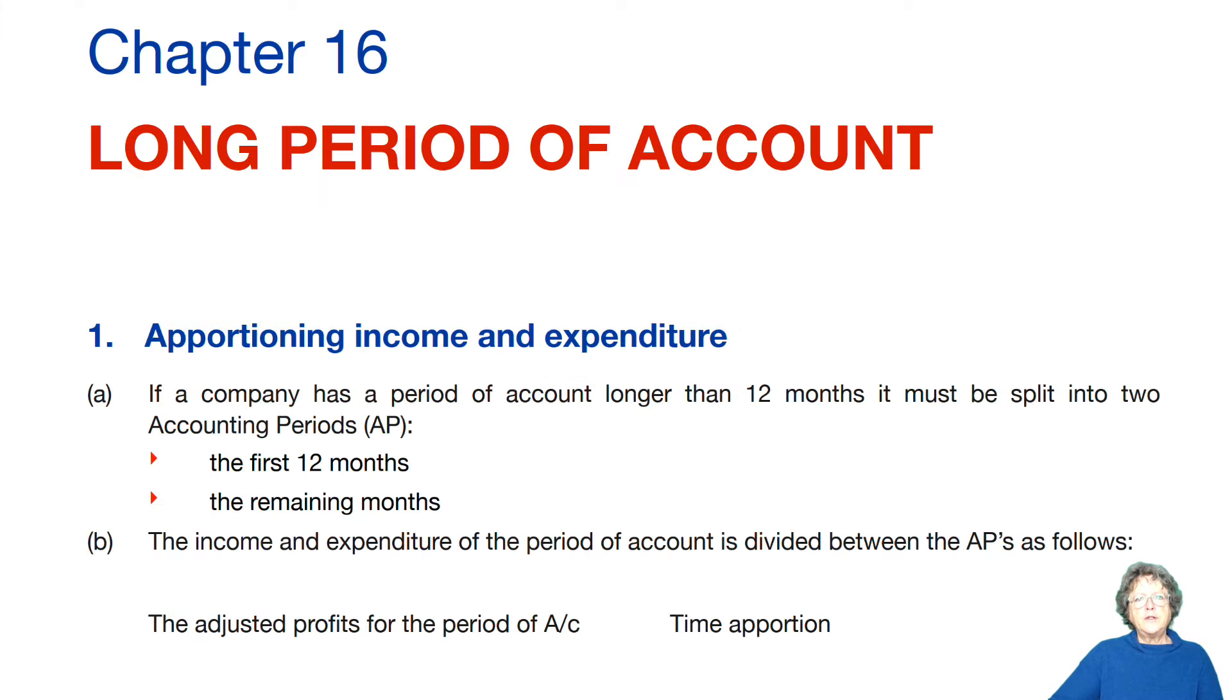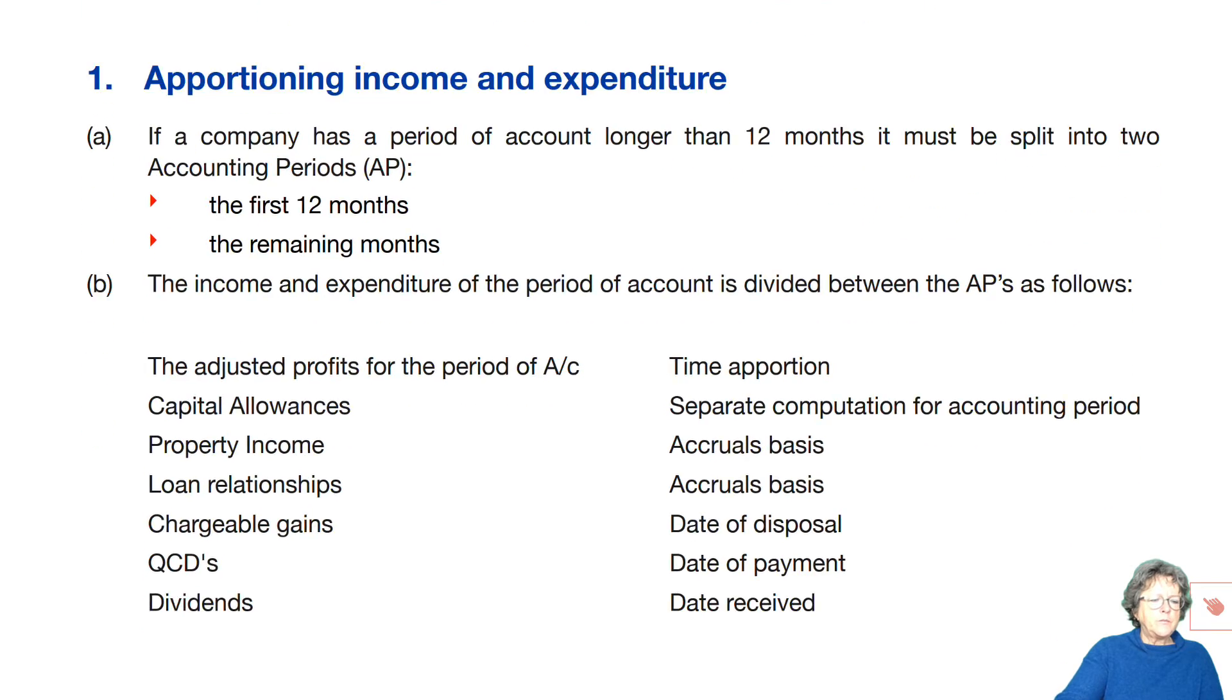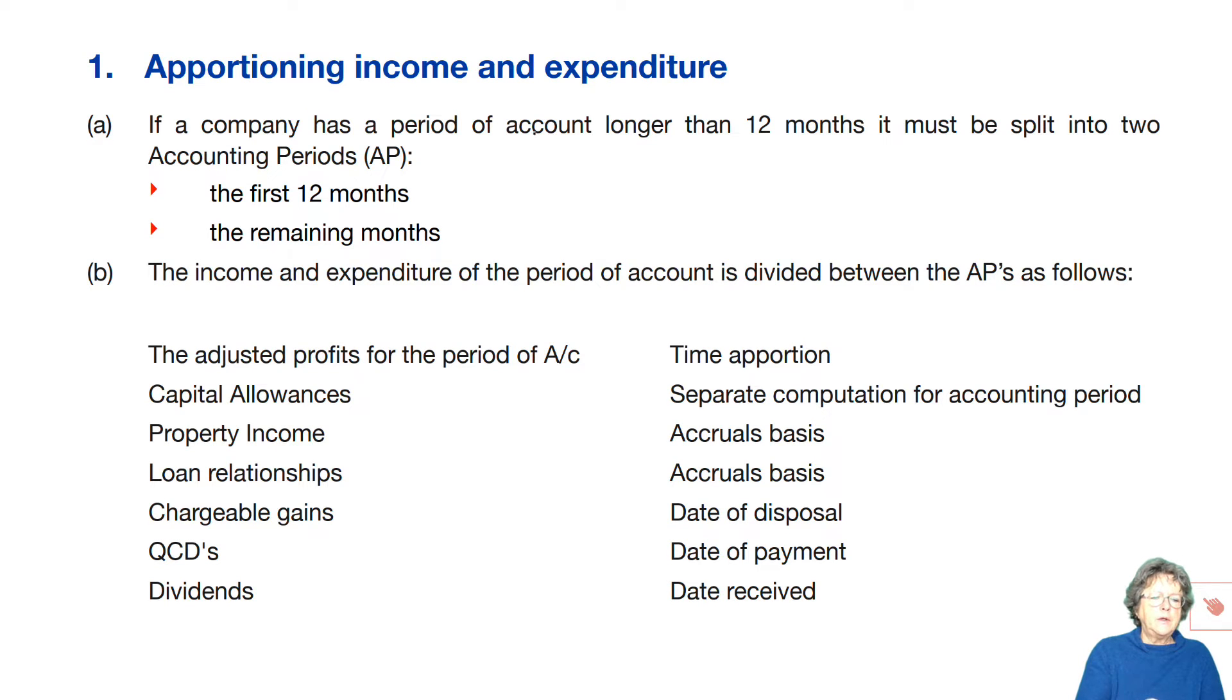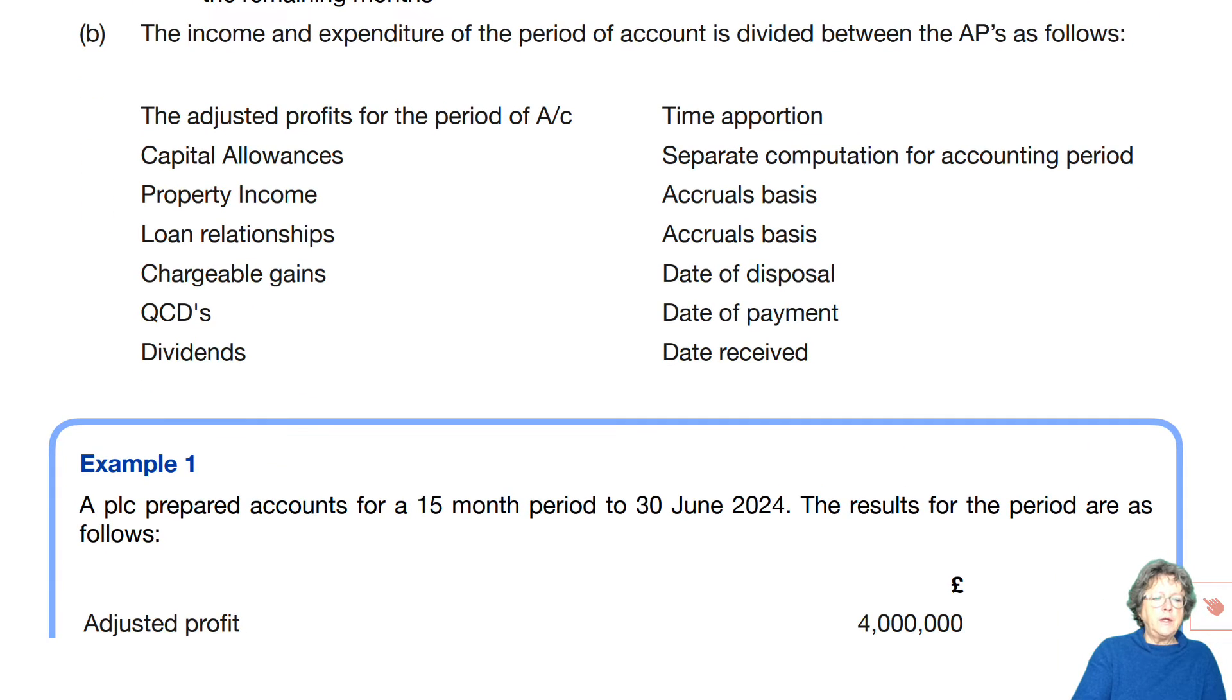This Corporation Tax chapter discusses what happens if we have a long period of account that is longer than 12 months long. As we learned in the previous chapter, you can only have an accounting period of 12 months. So if your period of account is longer, i.e. your set of accounts, the accounts that you've done for your financial year, if it is longer than 12 months, then it needs to be split. And as I explained to you before, it's 12 plus, which means that you need to divide both income and expenditure into those two periods.